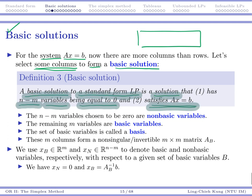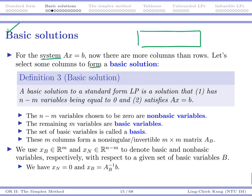It's a solution such that we first select n minus m variables and set them to 0, and then we try to solve the remaining m by m problem.